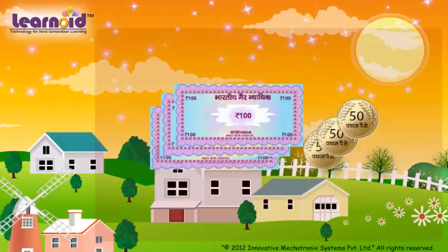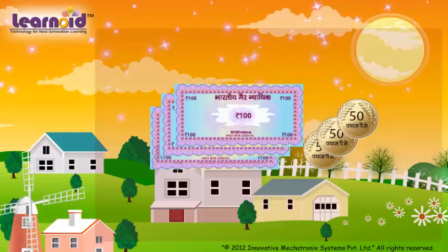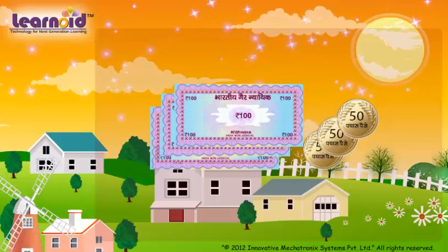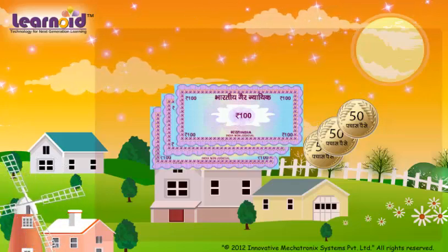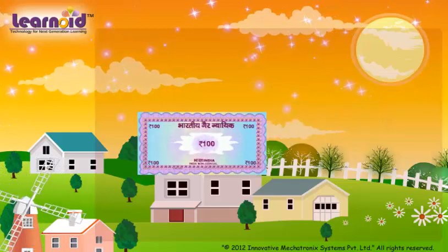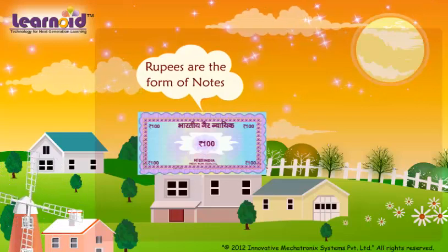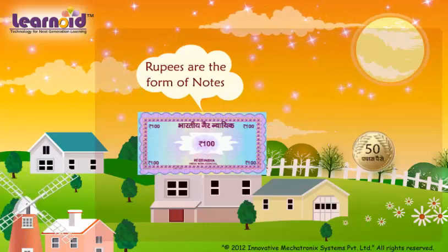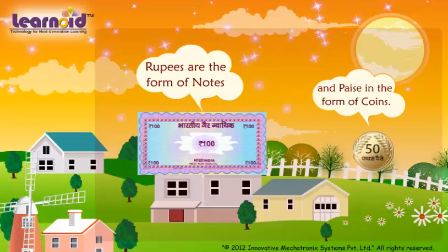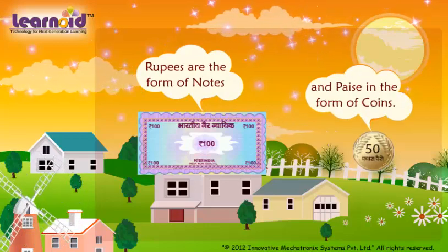Money used in India is rupees and paise. Rupees are in the form of notes and paise in the form of coins.